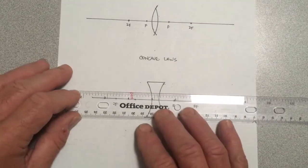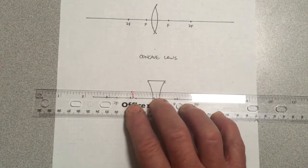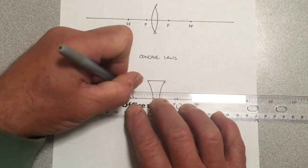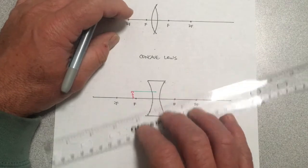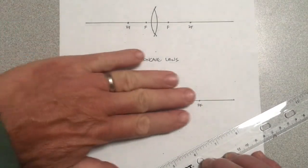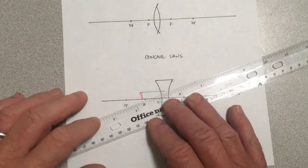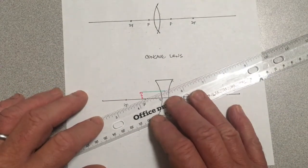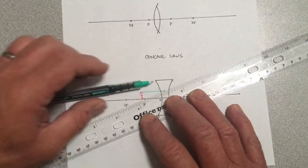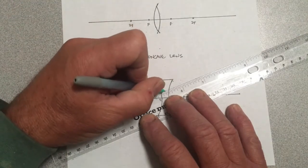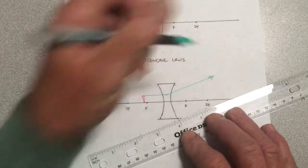Ray one, same as it ever was, for you Talking Heads fans. And this ray, this type of lens is divergent. Parallel rays spread out. Rather than converge, they spread out. And so how they spread out is as if they are spreading away from F. That is to say, parallel rays, rays parallel to the principal axis, leave the lens as if they had diverged from F. So there's my first ray.